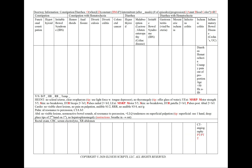In ischemic colitis, we'll see diarrhea with hematochezia and crampy abdominal pain out of proportion to the physical exam. Classically, our patient will again be greater than 50 years old with a history of atrial fibrillation. We'll add a CT angiography and PT and PTT.